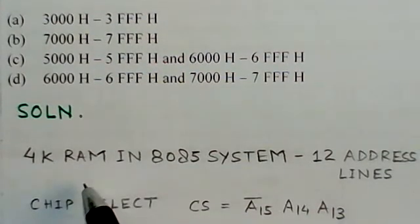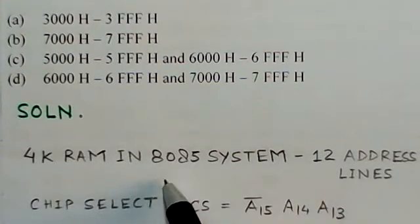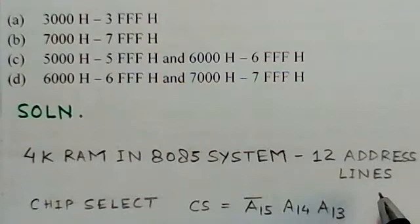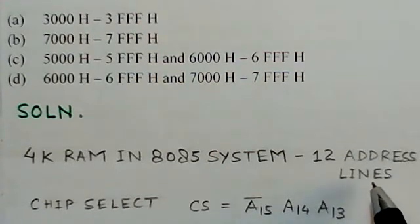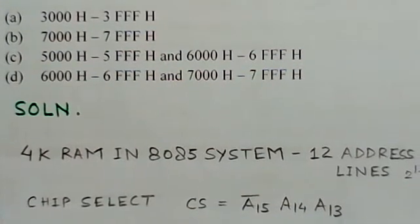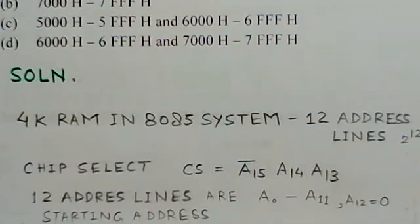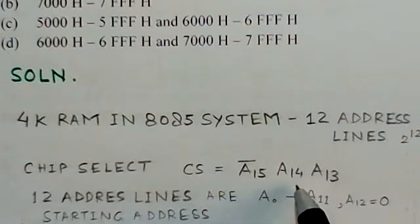It is given that the memory is a 4K RAM and part of an 8085 system. Since it is 4K RAM, it would need 12 address lines, meaning 2 to the power 12. These 12 address lines address the 4K RAM. The chip select signal CS is given as A15 bar, A14, A13.